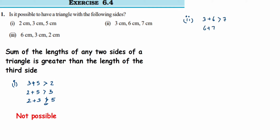Last combination: 7 plus 3 is 10, which is greater than 6. All three conditions are satisfied, so in this case it is possible. Yes, it is possible to have a triangle with this measurement.